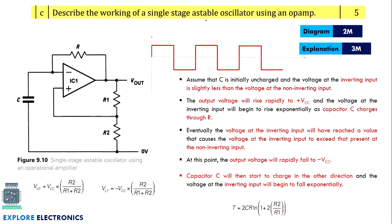Describe the working of a single-stage astable oscillator using op-amp. The oscillator circuit needs to be written using an operational amplifier. While writing the op-amp, carefully mark the negative terminal and the positive terminal — always practice writing it this way, otherwise there is a chance of making a mistake. Wherever op-amp comes, don't forget to write the negative and positive signs. This is the circuit of the astable oscillator; it can also be asked as an astable multivibrator. The diagram carries two marks and the explanation carries three marks; the expressions are also required to get full marks.